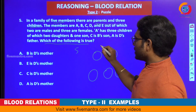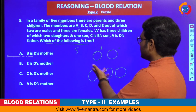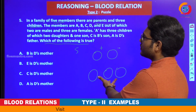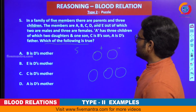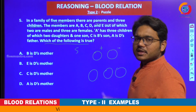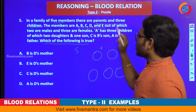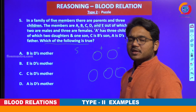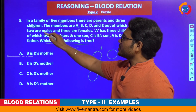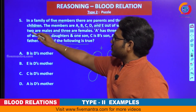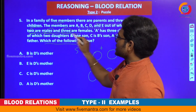Parents will be 1 male and 1 female, and they have 3 children. The members are A, B, C, D, and E, out of which 2 are males and 3 are females. This makes the problem simpler further.